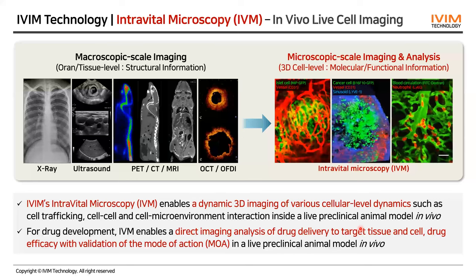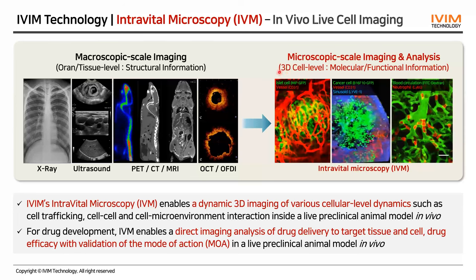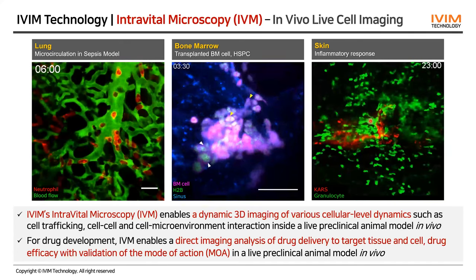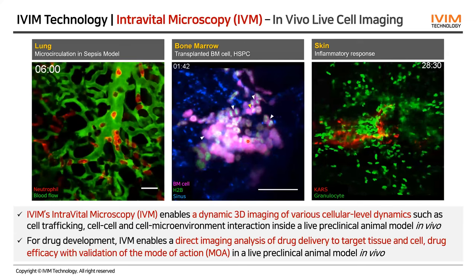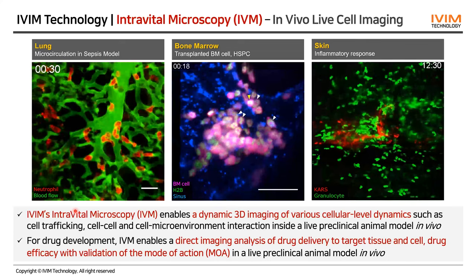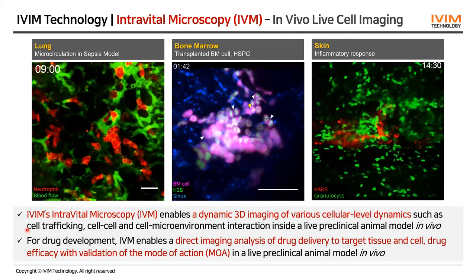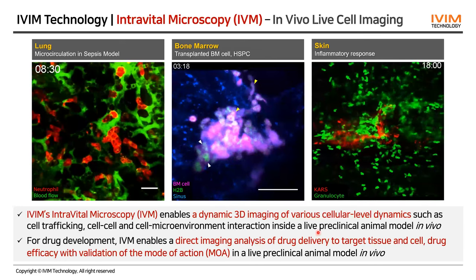Compared to macroscopic imaging technologies such as X-ray, PET, or MRI, intravital microscopy enables 3D cellular-level molecular and functional visualization of live models. We can image the lung, bone marrow, and skin — all individual live cells in these tissues. Our intravital microscopy enables dynamic 3D imaging of cellular dynamics such as cell trafficking, cell movement, and cell-to-cell or cell-to-microenvironment interactions inside live preclinical animal models.